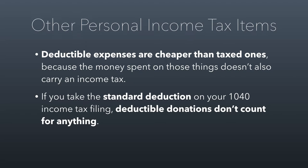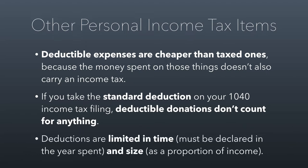Deductions are also always limited in time, generally meaning you have to claim the deduction in the year that you spent the money that way. I can't claim a charitable deduction for a donation I gave to the church 20 years ago — too much time has passed. I have to claim that donation in the year in which I made it. They're also limited in size — usually as a proportion of income. For example, if I made a million dollars and gave all of it to charity, the most I could deduct from my taxes is 50%, so I'd still pay taxes on that half million even though I gave it to charity.